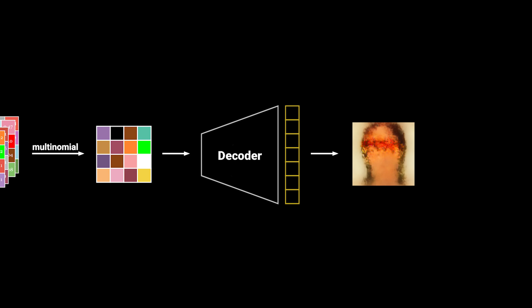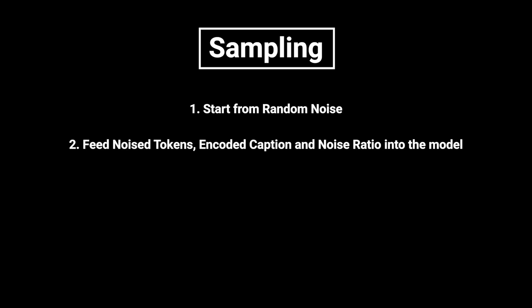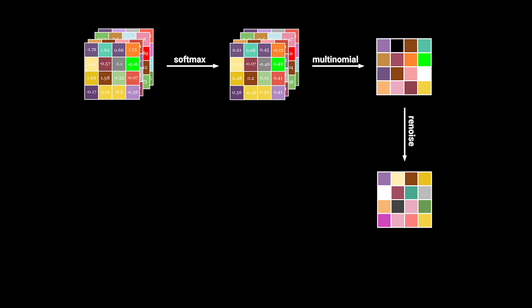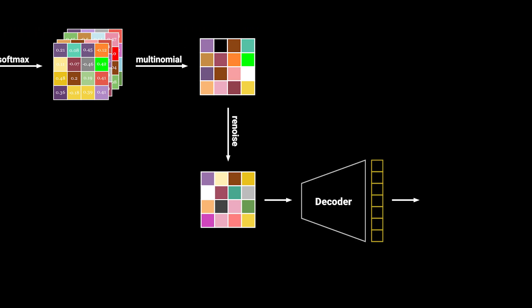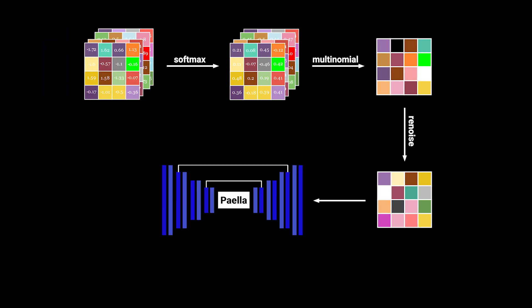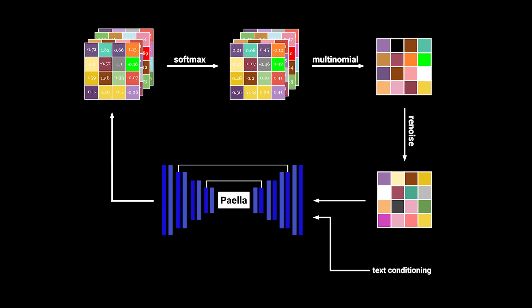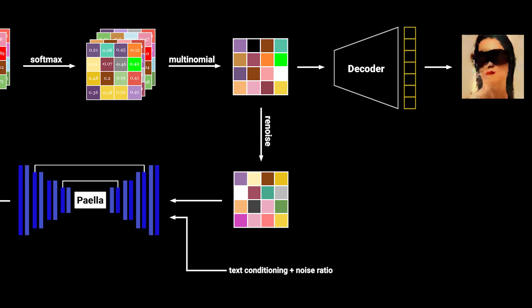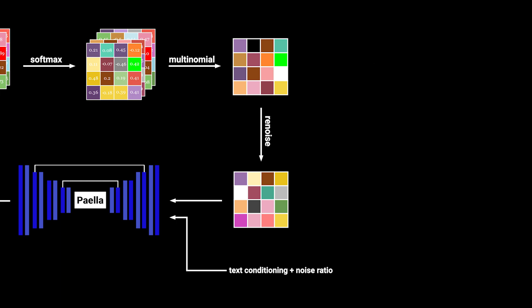The real power of Paella — and also classic diffusion models — comes from iterative re-noising and de-noising, where every time you re-noise with less noise than before. We take the prediction and re-noise it to, for example, 90% instead of 100%, and give the image back to Paella together with the text conditioning and the ratio, which is now 90%. This time we can already see much more structure. We repeat this process for a couple more times, and we see that every time the results become clearer and sharper. This is the basic logic of how sampling works.